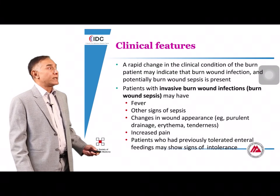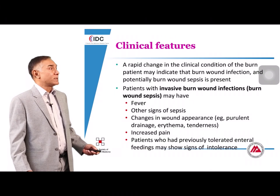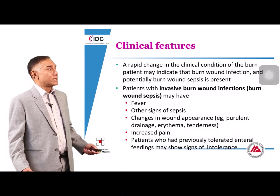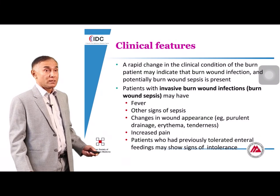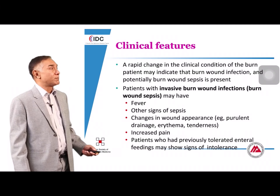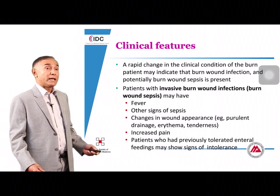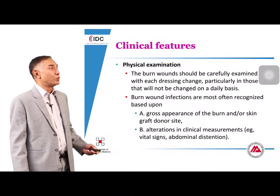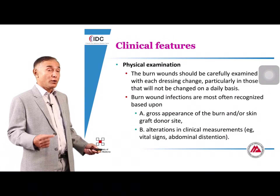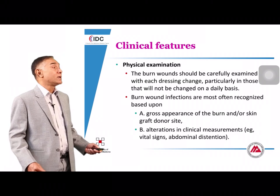A rapid change in the clinical condition of the burn patient indicates that burn wound infection may be present. Typical signs include fever and other signs of sepsis, along with a change in burn wound appearance — purulent drainage, tenderness, increased pain, and lack of tolerance of tube feeds. Physical examination is important to localize the source to the burn wound; it should be inspected carefully daily, and the plastic surgeon should be involved based on gross appearance and altered clinical manifestations.